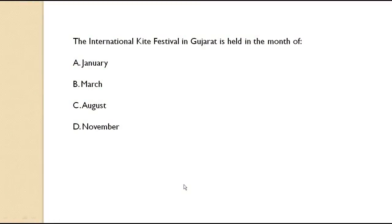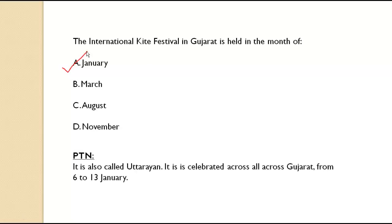The International Kite Festival in Gujarat is held in which month? It is celebrated in January. This festival is also called Uttarayan and is celebrated all across Gujarat from 6th to 13th January.